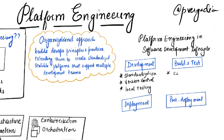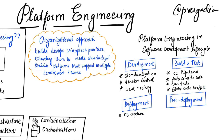During the build and test phases, the platform offers CI pipelines that automatically compile code, run tests, and perform static code analysis. In the deployment phase, platform engineering tools provide CD pipelines that can deploy applications to various environments — including staging, production, and UAT — with consistency and reliability.